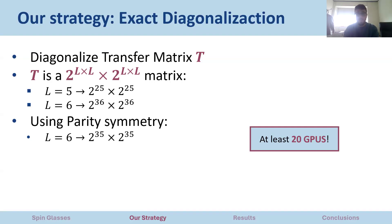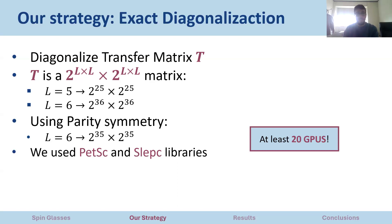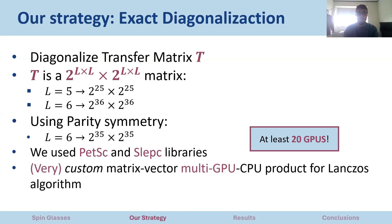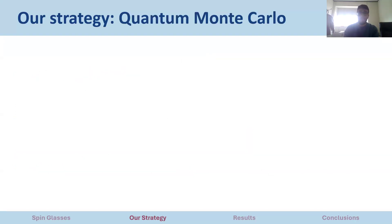Our exact diagonalization program uses the PARPACK and ARPACK libraries, and we also created from scratch a custom program that performs the Lanczos algorithm using a multi-GPU/CPU approach for the matrix-vector product. The other strategy, to address the problem of not being able to study large systems, consists of using quantum Monte Carlo.